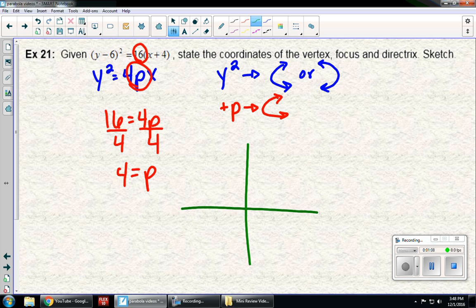In order to sketch my picture, I need the vertex. Remember, the vertex is what goes with x and y, but it's the opposite. So my vertex is going to be negative 4, positive 6.